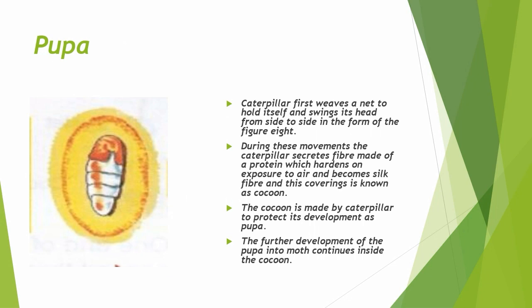In the Pupa stage, the caterpillar first spins a net to hold itself and swings its head from side to side in the form of a figure 8. During these movements, the caterpillar creates fiber made of protein, which hardens on exposure to air and becomes silk fiber. This covering is known as a cocoon. The cocoon is made by the caterpillar to protect its development as a pupa into a silk moth. The further development of the pupa into a moth continues inside the cocoon.